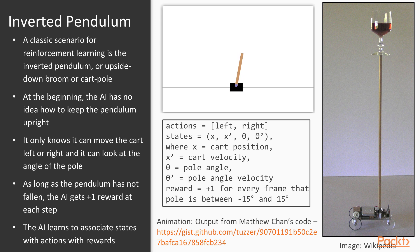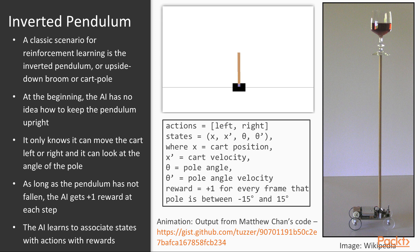As long as the pendulum has not fallen, the AI gets a plus one reward for each step or frame. The job of reinforcement learning is to figure out that if the pole is falling to the left, the cart should move left and vice versa. The animation shown here is from an example by Matthew Chan that learns over many simulations to keep the pendulum balanced. This code actually uses Q-learning, which we'll look at later.